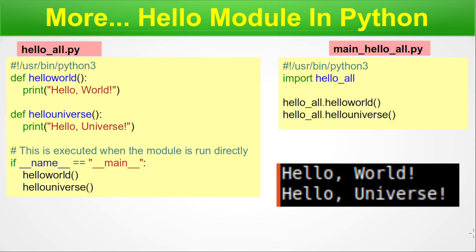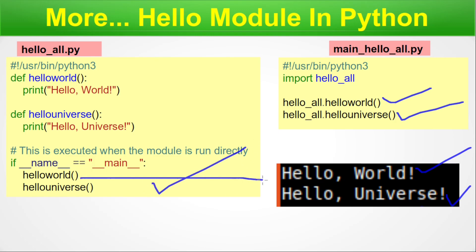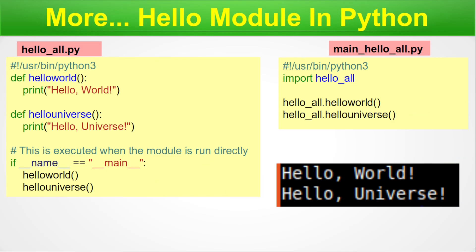Once we execute this, hello_world() gives the output 'Hello World' and hello_universe() gives 'Hello Universe'. If you run the module directly, you get the same outputs. We are done with this slide on the different types of Hello modules in Python. You now have an idea of how to write a module, and how to reuse Python code from a module using the import command.